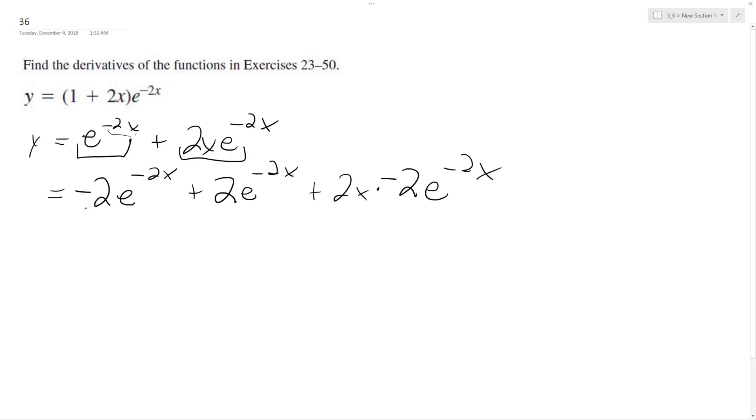Negative 2e to the negative 2x and 2e to the negative 2x cancel out, and we're left with this here, which multiplied with a negative 2 becomes negative 4x e to the negative 2x, and hence this is what y prime is equal to.